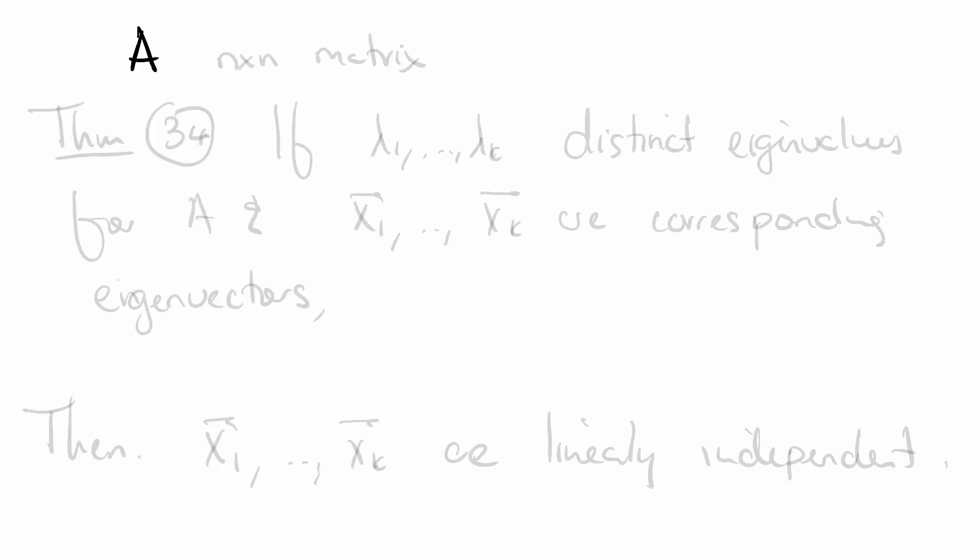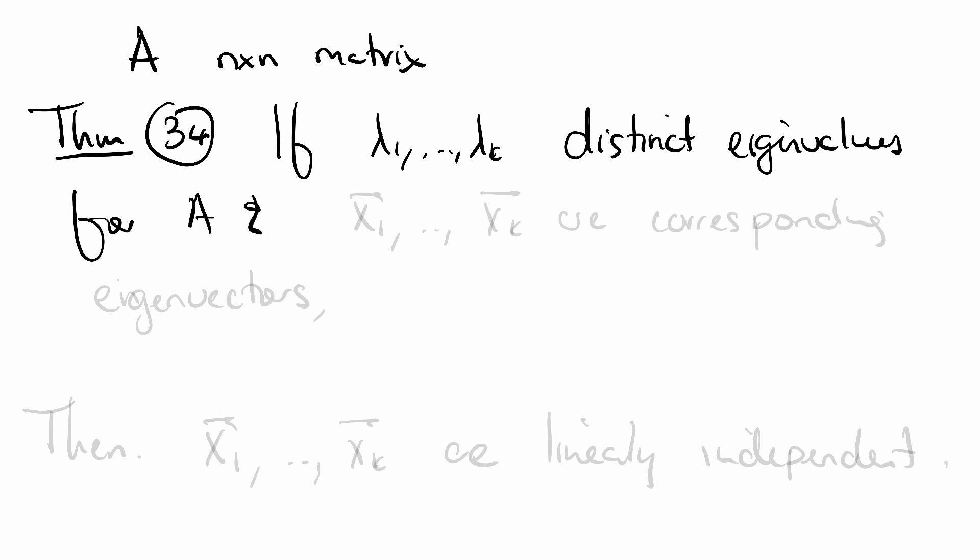All right, let's start off. As usual, A is an n by n matrix, and we're going to prove a theorem. Theorem 34. If λ₁ through λₖ are distinct eigenvalues for A, and x₁ through xₖ are the corresponding eigenvectors, then we claim that x₁ through xₖ are linearly independent.